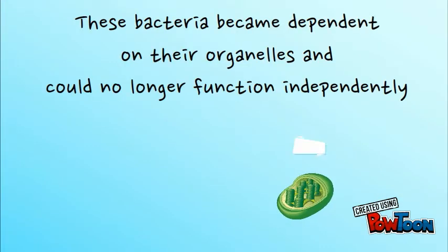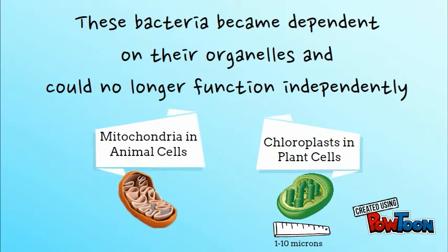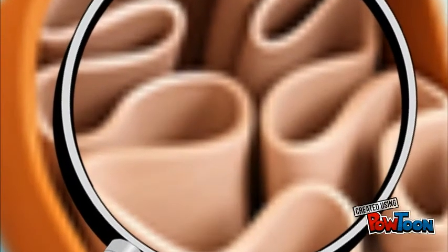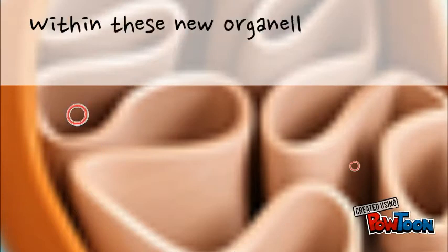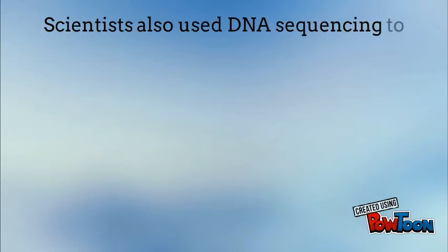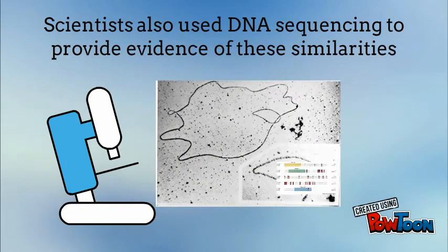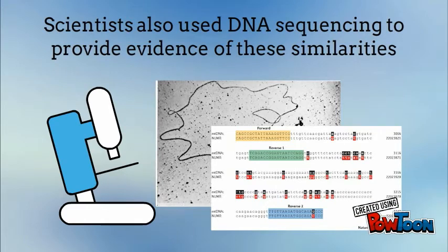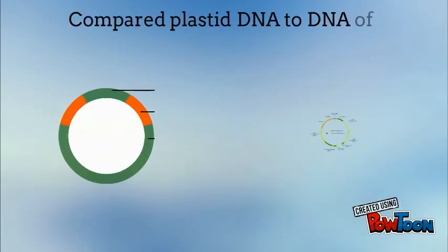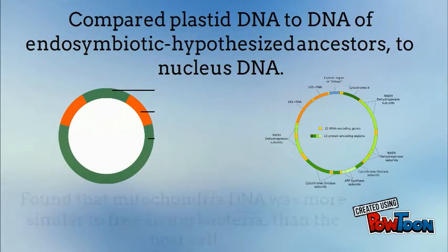So how do we know that the bacteria and the mitochondria are related? Within this new organelle, there is circular DNA, much like the ones found in modern-day bacteria. Scientists also use DNA sequencing to provide evidence of these similarities. When comparing mitochondrial DNA to nucleus DNA and endosymbiotic hypothesized ancestor DNA, it was revealed that the most similar of these three were the mitochondrial DNA and the endosymbiotic hypothesized ancestor DNA.